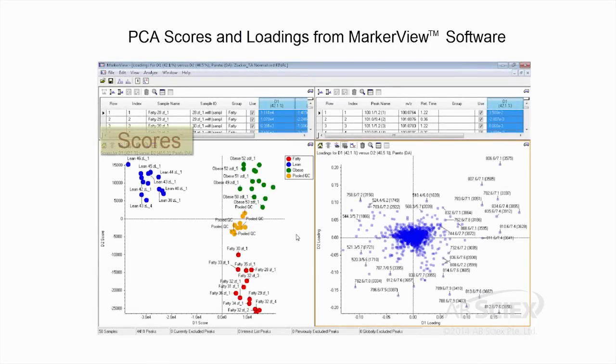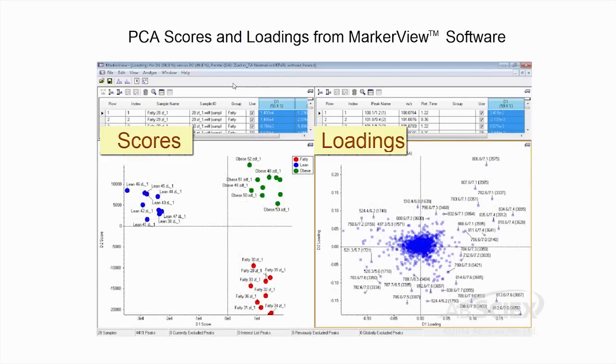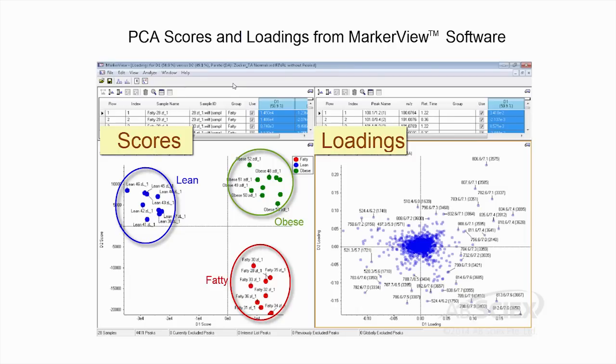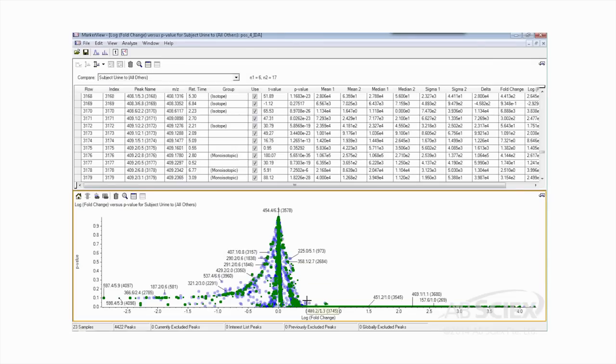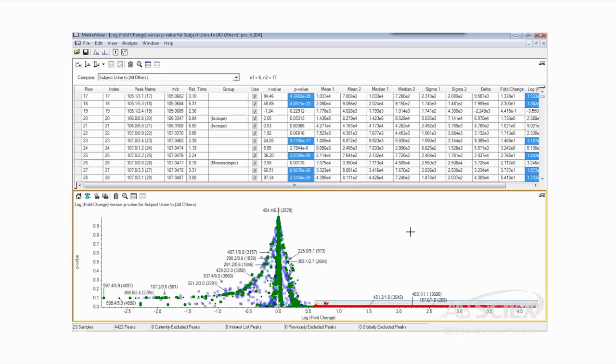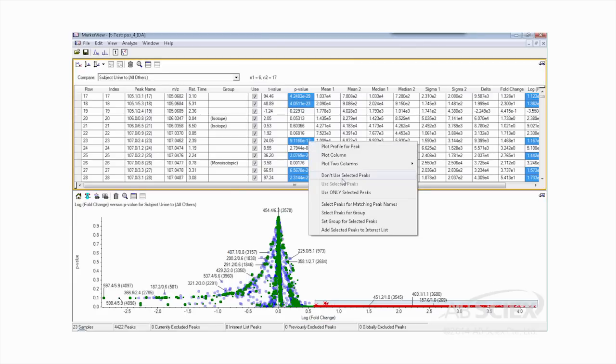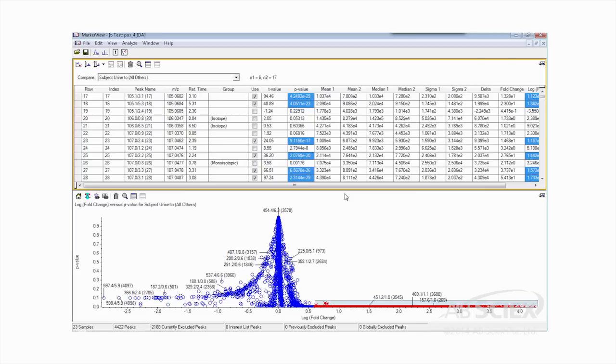MarkerView software compares different groups of samples within a study and quickly determines if there are any differential features amongst the groups by multivariate statistical means. Here we show an example of a Zucker rat model to study the effects of obesity, diabetes, and cardiovascular diseases. Principal component analysis, t-tests, and principal component variable grouping are among the tools one can quickly use to generate features and peak lists of interest in MarkerView.